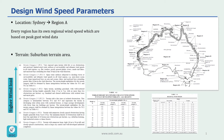Let's go through more details by looking at design wind speed parameters. The first parameter we are going to look at is the location of our building. Our building is located in Sydney, which is considered as Region A. Every region in Australia has its own regional wind speed based on peak gust wind data. In the Australian code AS1170.2, there is a map showing different regions across the country, and if we look at Sydney, we can see our region is Region A2.